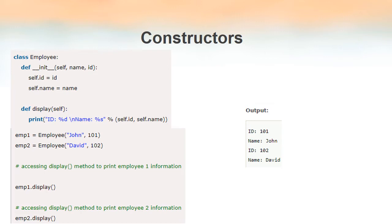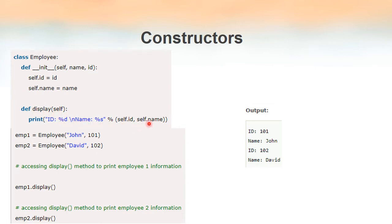We will see an example of constructors now. We have a class named `employee`. See this `__init__` method — this is the constructor of the class `employee`. As mentioned earlier, `self` is the first parameter. Apart from that, we have two more parameters: `name` and `id`. `self.id` means the id variable inside the class, assigned the value of the parameter `id`. Similarly, `self.name` is assigned the value of the parameter `name`. We also have a method named `display`, which also takes `self` as the first argument, and accesses `self.id` and `self.name`.